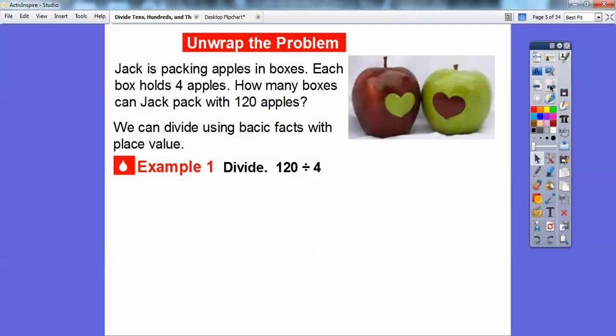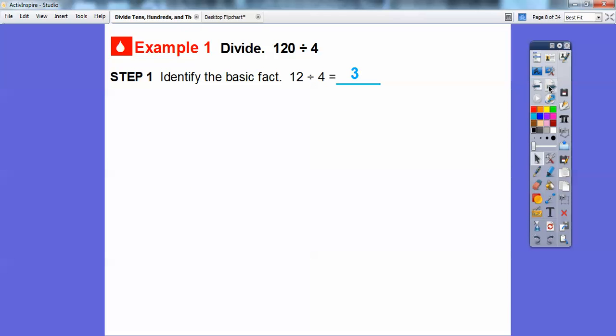We're going to divide 120 divided by 4, and we'll use the basic fact that 12 divided by 4 is 3. I just slid that up there. So 12 divided by 4 is 3, and then we're going to use place value.